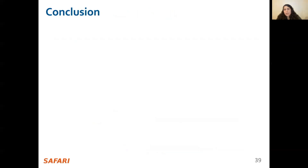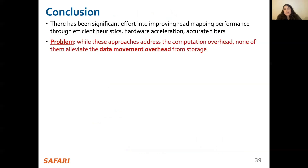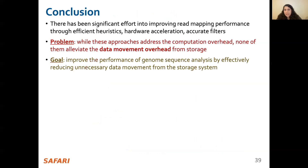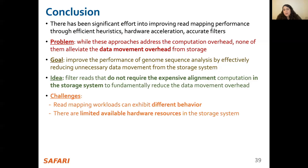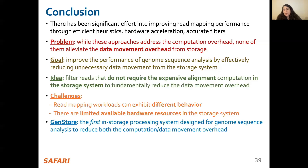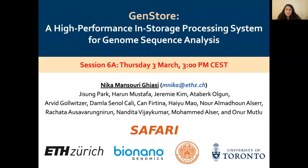Let me conclude with a summary. There has been significant effort into improving readmapping performance through efficient heuristics, hardware accelerators, and various filters. While these approaches address the computation overhead in readmapping, none of them alleviate data movement overhead from storage, whose impact becomes even larger when computation overhead gets alleviated. Our goal is to improve performance of genome sequence analysis by effectively reducing unnecessary data movement from the storage system. The key idea is to filter reads that do not require expensive alignment computation in the storage system to fundamentally reduce data movement overhead. We propose GenStore, the first in-storage processing system designed for genome sequence analysis to reduce both computation and data movement overhead, providing high performance and energy benefits compared to state-of-the-art hardware and software baselines.